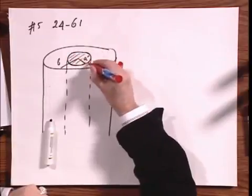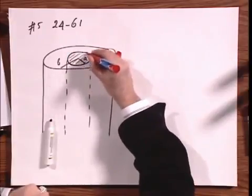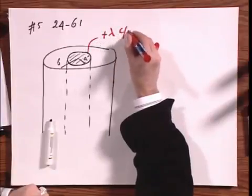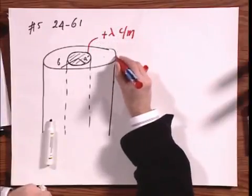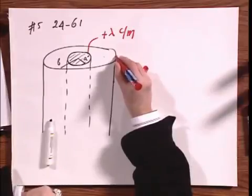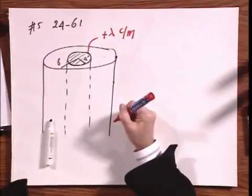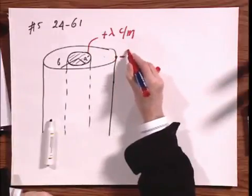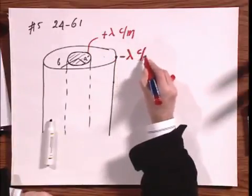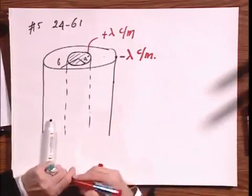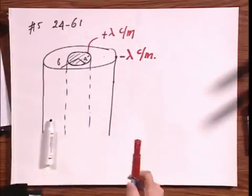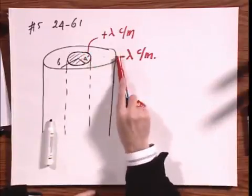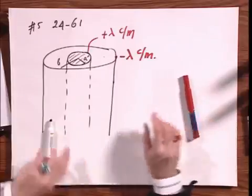We have on the inner cylinder, which must be on the outer surface of it, we have a charge plus lambda Coulomb per meter. And we have on the outer shell of the cylinder, which will be undoubtedly on the inside, minus lambda Coulomb per meter. So the net charge on the whole thing will be zero. Because we have here the same amount plus per meter as we have here minus per meter.